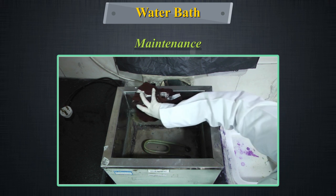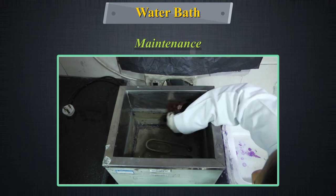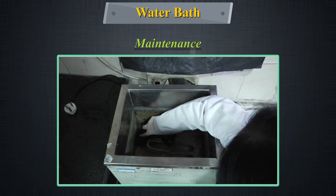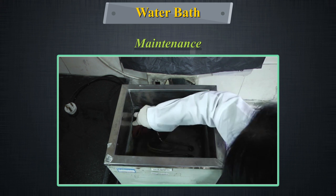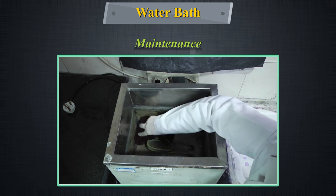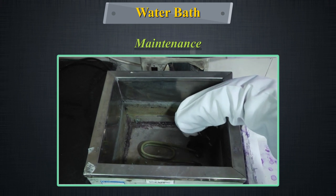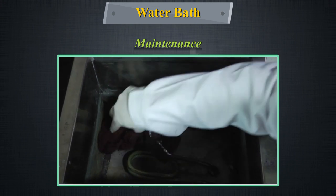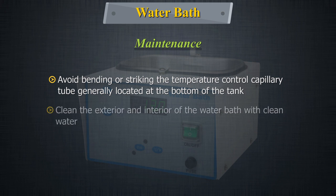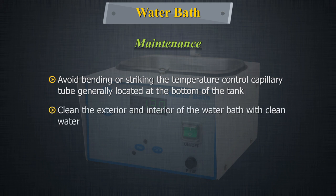If there is any indication of corrosion, use substances for cleaning stainless steel. Rub lightly with synthetic sponges or equivalent. Avoid using steel wool to remove rust stains as these leave particles of steel which could accelerate corrosion. Avoid bending or striking the temperature control capillary tube generally located at the bottom of the tank. Clean the exterior and interior of the water bath with clean water.